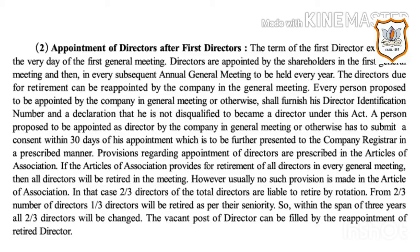Provisions regarding appointment of directors are prescribed in the articles of association. If the articles provide for retirement of all directors in every general meeting, then all directors will retire at that meeting. However, usually no such provision is made. In that case, two-thirds of the total directors are liable to retire by rotation, and one-third of those will retire as per seniority. Within a span of three years, all two-thirds directors will be changed. The vacant post can be filled by reappointment of the retired director.